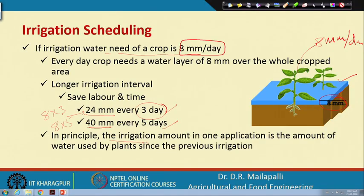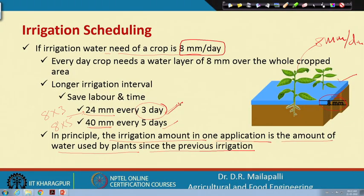In principle, the irrigation amount in one application is the amount of water used by plants since the previous irrigation. For example, if you are giving irrigation every 3 days, on day 0 you gave 24 mm; on day 3 you give again 24 mm. The amount given on day 3 is accumulated from the previous 3 days — that is the water used by plants since the previous irrigation.